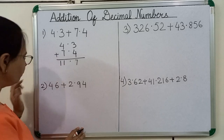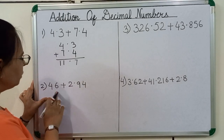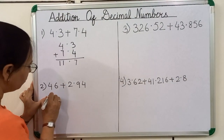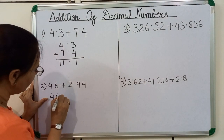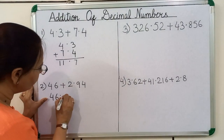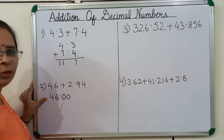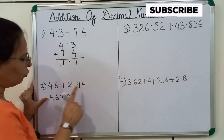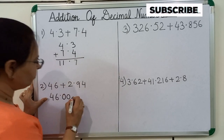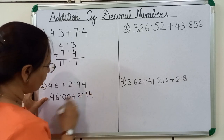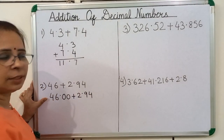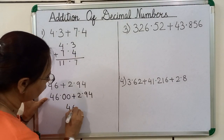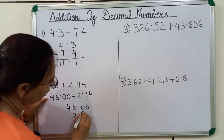Now we will see the next example. Here you can see 46 is a whole number. So to convert 46 into a decimal number, we will write a decimal point after 46 and after that we will write 2 zeros. We have written 2 zeros after the decimal because here there are 2 decimal places. Now we will write 2.94 and arrange these like decimal numbers according to their place value: 46.00 and 2.94.